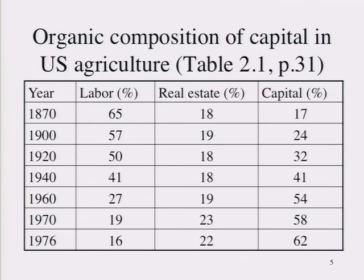Here is a table from Kloppenberg showing the organic composition of capital in U.S. agriculture from 1870 to 1976. The cost of land has remained fairly stable as a portion of overall capital invested in agriculture, but the relative shares of labor and capital have basically switched places. In 1870, labor was 65% and capital was 17%. In 1976, labor was only 16% and capital was 62%. This is exactly the formulation from Marx of the organic composition of capital, here provided empirically in terms of U.S. agriculture — and this supports Kloppenberg's contention that even if it's still family farming, it has dramatically changed.